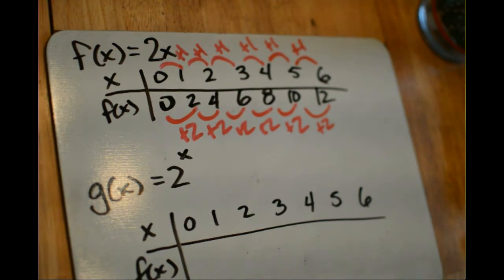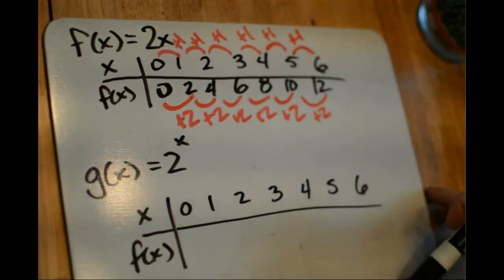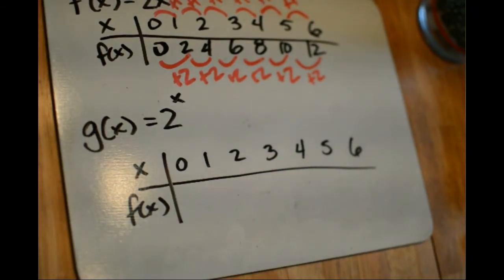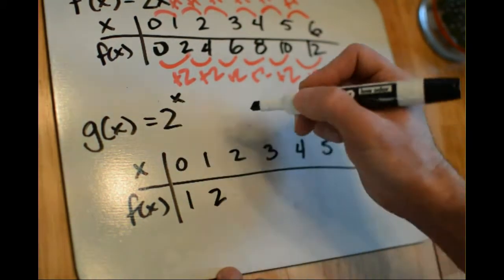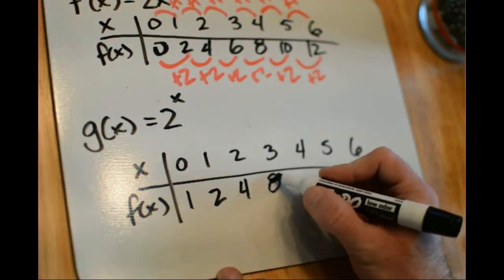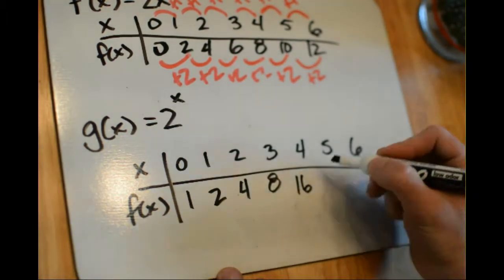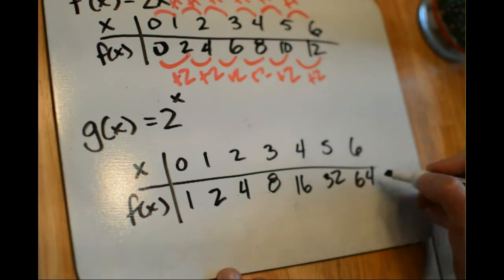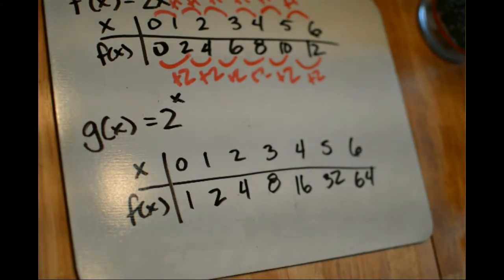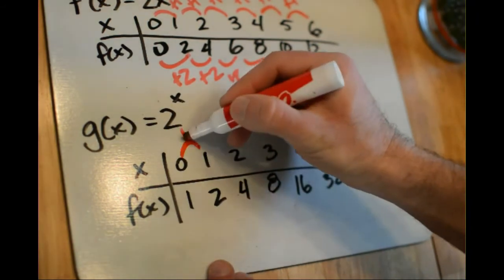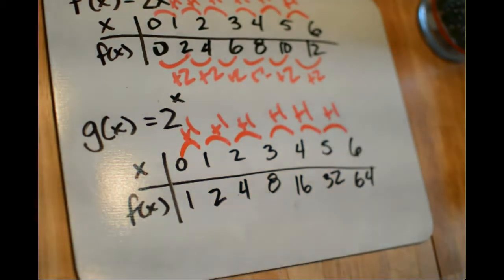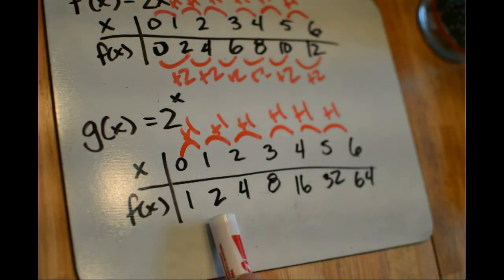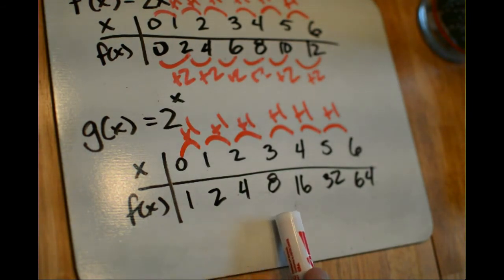Now, exponential growth is going to work a little bit differently. Here I have another function, g of x, equal to 2 raised to the x power. So 2 raised to the 0 power is 1, 2 to the 1st power is 2, 2 to the 2nd power is 4, 2 to the 3rd power is 8, 2 to the 4th power is 16, to the 5th power is 32, to the 6th power is 64. The difference here is that g of x is not increasing by a constant amount — it's increasing by 1, then 2, then 4, then 8, then 16. So we don't have a constant rate of change.